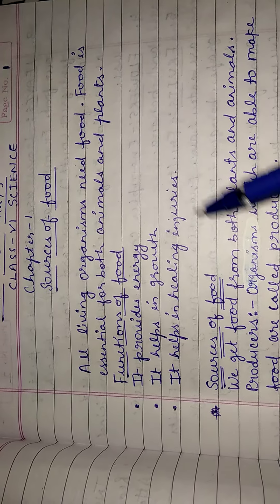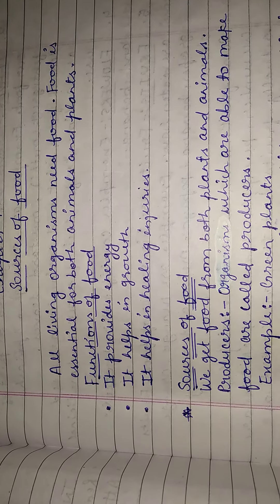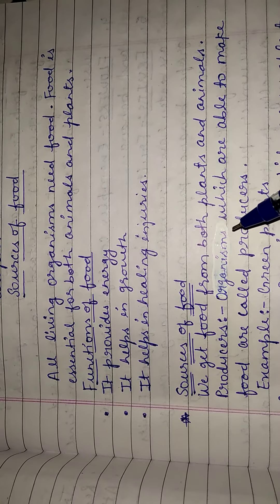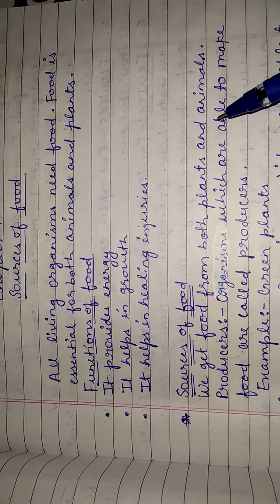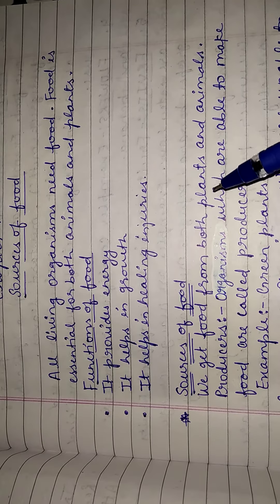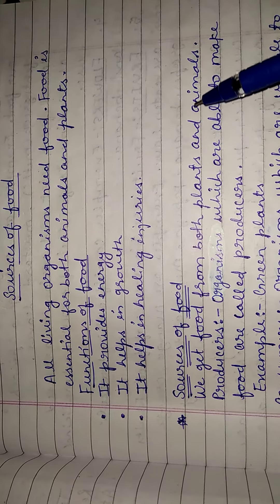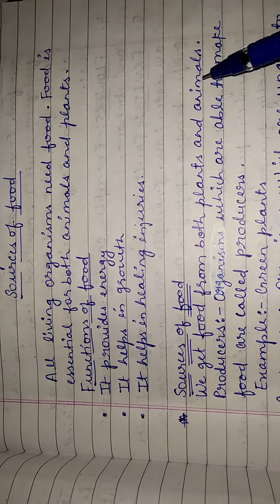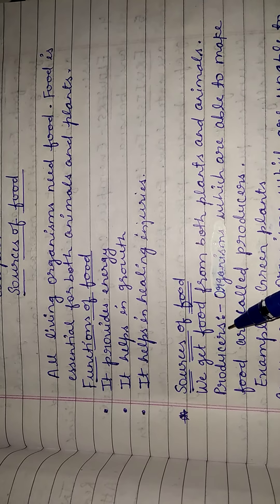Sources of food means from where do you get your food? We get food from both plants and animals. Think about whatever food you are eating — from where are you getting it? The answer is: seeds, pulses, and vegetables are coming from plants, and milk, curd, ghee, and such things are coming from animals.